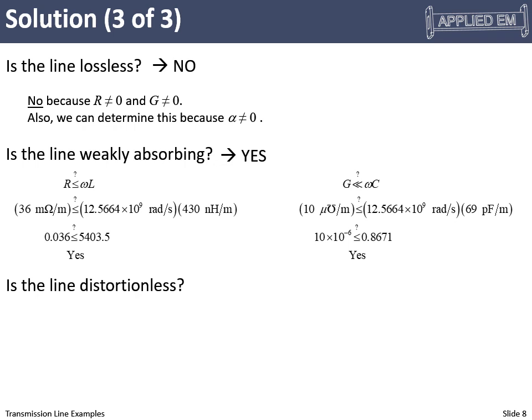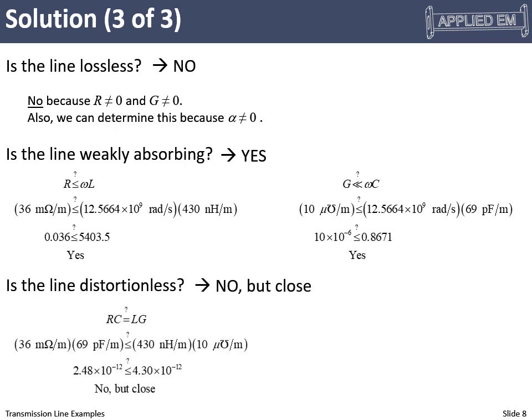Is it a distortionless line? Answer's no, but it turns out it's quite close. So we'll write our condition this way. We fill in our numbers and we get 2.5 times 10 to the minus 12, which is actually less than 4.3 times 10 to the minus 12. It would have to be equal to say that it's distortionless, but I would say it's pretty close.